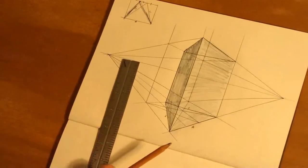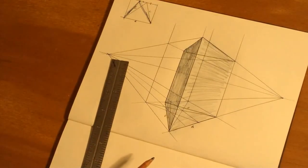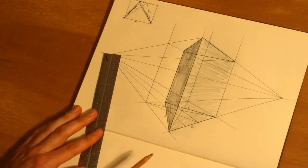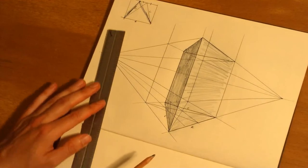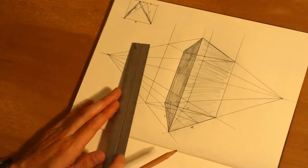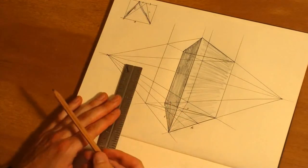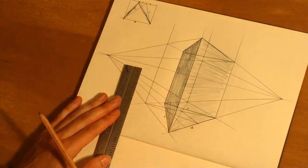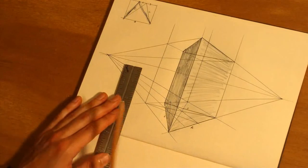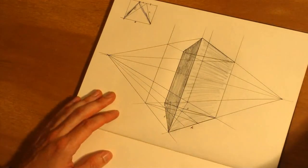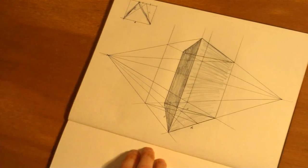All right, so there it is - a triangular solid in two-point perspective. Now you can do the same method for one-point perspective, just use one point, draw out your plane, center it, find your geometric shape, and project it upwards. That's it.